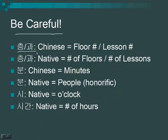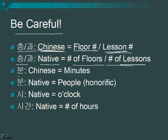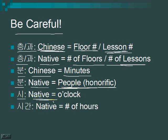Be careful: 층 and 과 with Chinese numbers mean a specific floor number or lesson number. But 층 and 과 with native numbers mean counting the number of floors or lessons. Similarly, 분 with Chinese numbers means minutes — 오 분 is five minutes — while 분 with native numbers counts people honorifically — 다섯 분 means five people. And 시 means o'clock — 한 시 is one o'clock — while 시간 means number of hours — 한 시간 is one hour, 두 시간 is two hours, 두 시 is two o'clock.